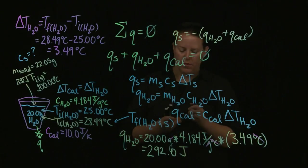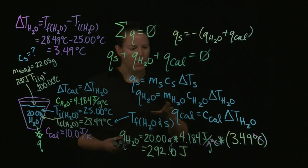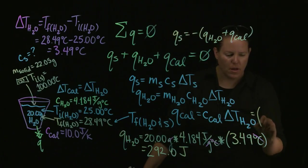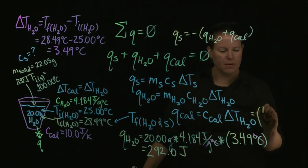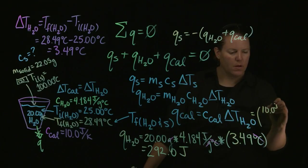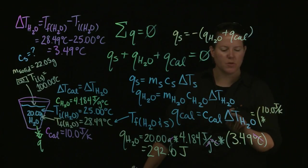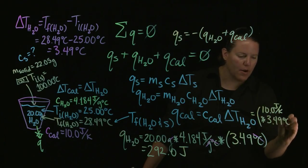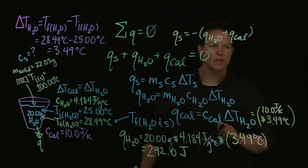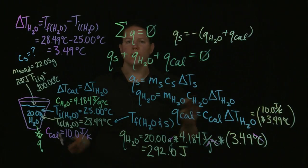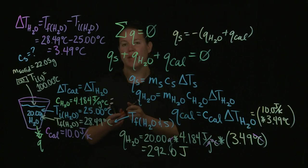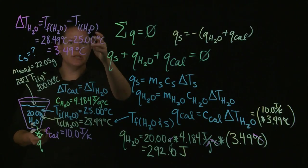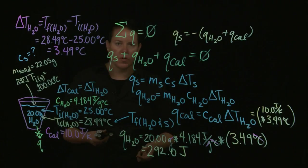I need to do the same thing for the Q of the calorimeter. The Q of the calorimeter was 10.0 joules per Kelvin, and the change in temperature of the water is 3.49 degrees Celsius. Your question is: can degrees Celsius and Kelvin cancel out? And of course they can. In this particular case, remember that we're taking a change in temperature, and changes in temperature for degrees Celsius and Kelvin are the same.